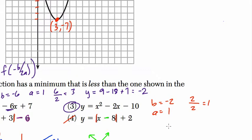And then you plug in one. So we have y equals one squared minus two times one, which is minus two, minus 10. And it's one minus two. Negative one minus 10 is negative 11. That is lower than negative seven. So that would be a graph where the lowest point, the vertex, the minimum, is below negative seven.